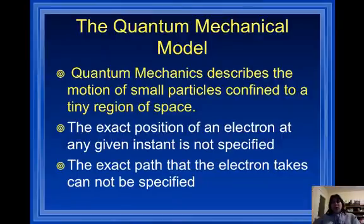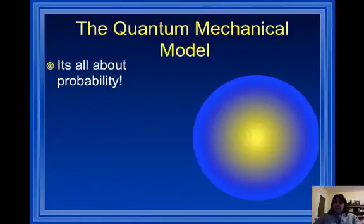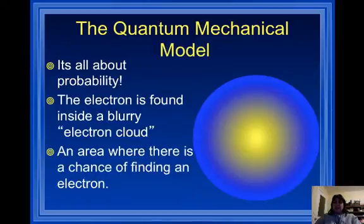Now we have a three-dimensional region, a sphere, that is very different from the two-dimensional orbital. Now, the electron can be anywhere within that sphere. It's all about probability. The electron is found inside a blurry electron cloud. Somewhere in that sphere, the electron is located. It's an area where there is a chance of finding an electron.